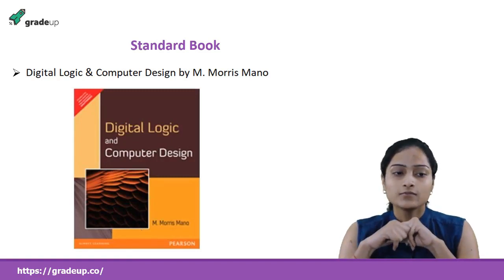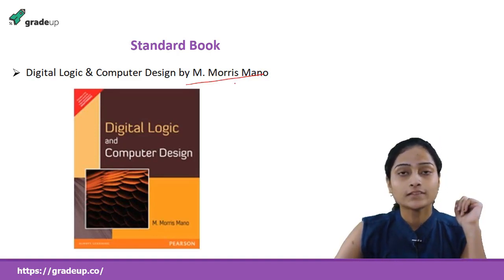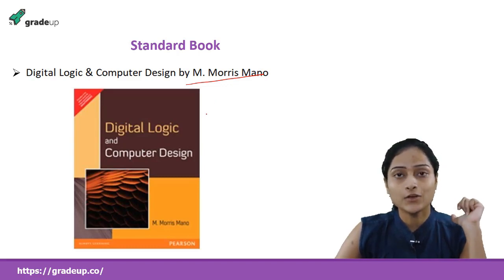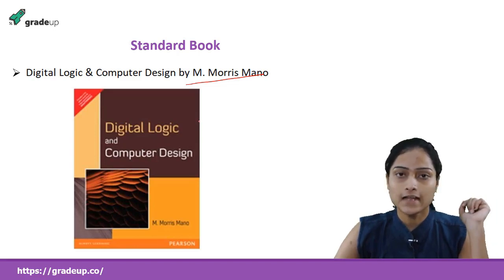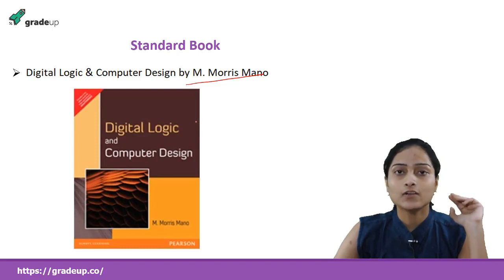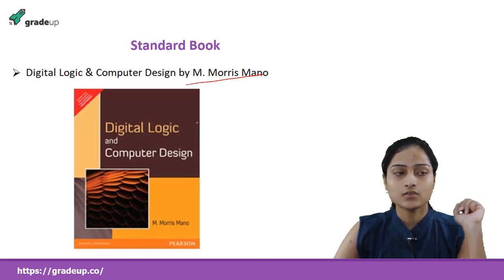The standard book you can refer while studying is Digital Logic and Computer Design by Maurice Mano. This book is really good for digital logic. It contains a lot of questions on each and every topic and can help you while you practice. The language is quite easy. You don't need to study the whole book, but you can refer it for your doubts and for practicing questions. Always refer only standard books and try to avoid local books, as standard books contain authenticated and correct data.